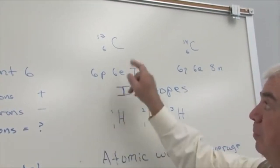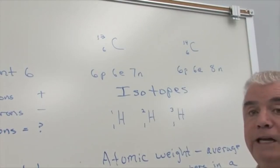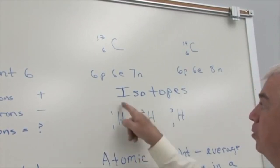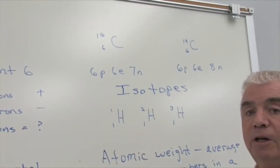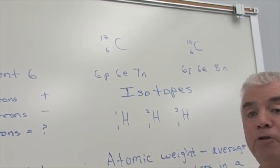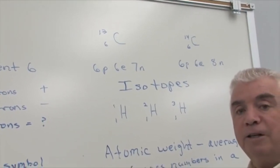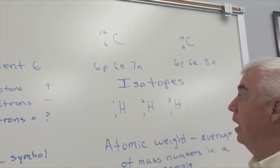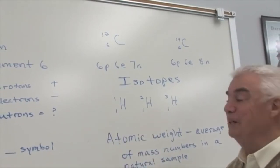And these three examples, carbon-12, 13, and 14, are referred to as isotopes. Isotopes of an element have different number of neutrons or a different mass number. And they all have the same atomic number.